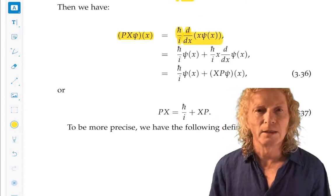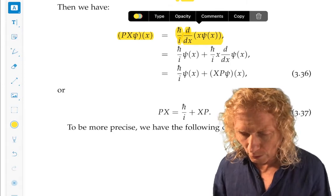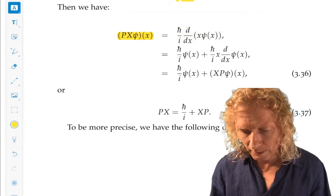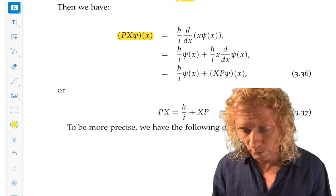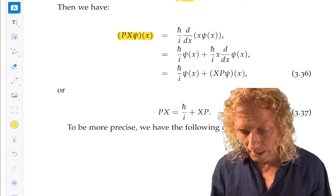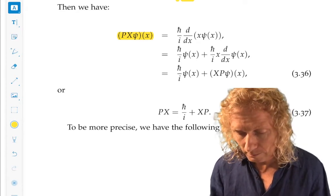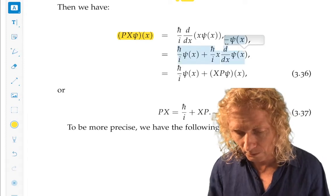Now this is set up ideally for differentiation using the product rule, d by dx of x times psi of x, and that's what we carry out in the next line. h bar over i goes along for the ride. And this is what we get.